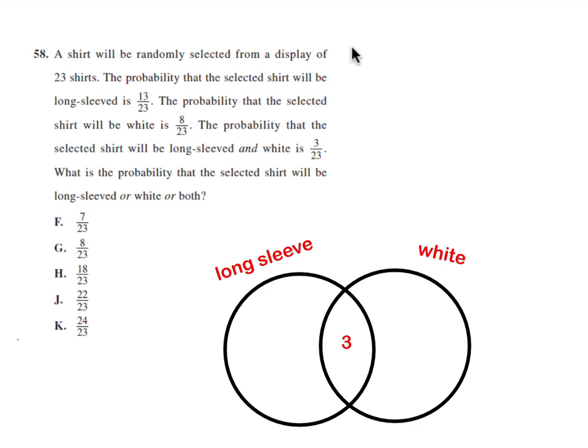Number 58. Since there are 23 shirts and they give us these three probabilities, I'm thinking there's 13 long sleeve, there's 8 white, and there's 3 that are long sleeve and white. Whenever I have a problem like this, I like doing a Venn diagram. Notice I put the 3—I always put the overlap in there first.